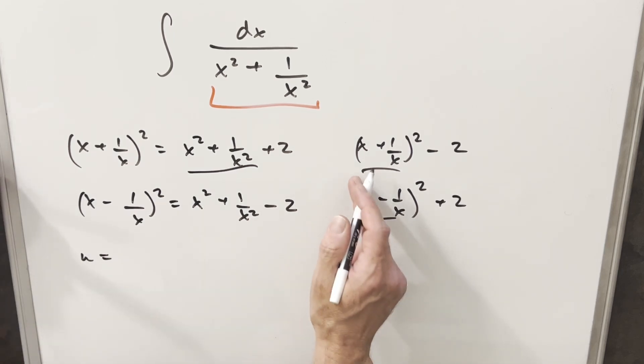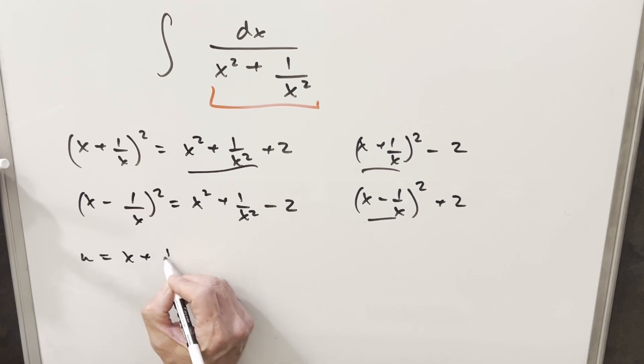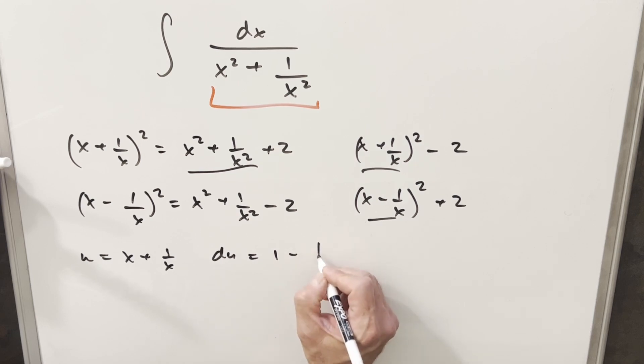Like if we have this set up and let's say we call our u equal to x plus 1 over x, then taking the derivative, our du value for this is going to be 1 minus 1 over x squared dx.